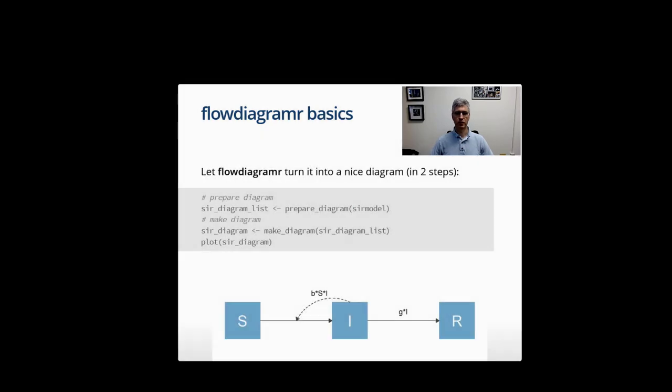Once you've defined your model, there's a two-step process. First you call a function called prepare_diagram that gives you a data frame, and then you use that to make your diagram. If we apply this to the simple model you just saw, you get the diagram at the bottom.